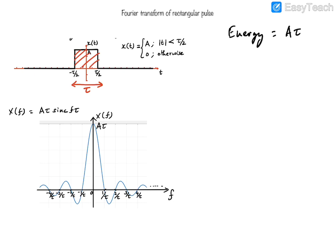For this particular pulse with fixed energy A·tau, we want to understand what its Fourier transform or spectrum looks like. The Fourier transform of the rectangular pulse is a sinc function, as shown in this figure. The sinc function has a peak value at a frequency value of zero, and that peak value is equal to the energy of the pulse, which is A·tau. So the peak value A·tau occurs exactly at the frequency value of zero.